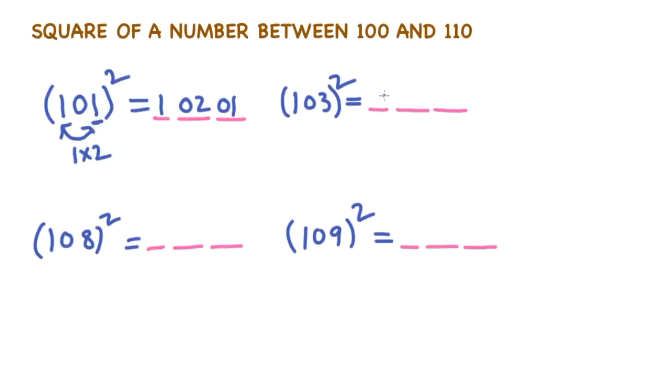It's very simple technique. See here I will try to do little faster. 1, 3 whole square is 09. Now multiply these two numbers. 1 into 3 is 3. Multiply that with 2. 3 into 2 is 6. Very simple.